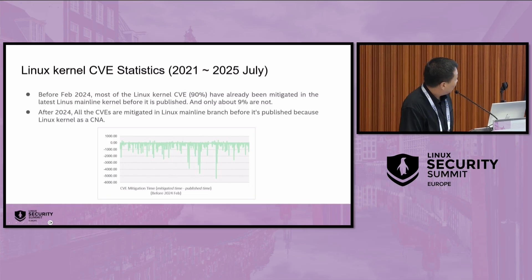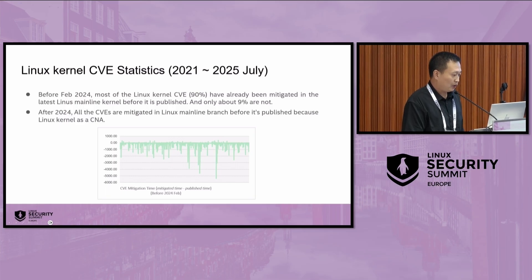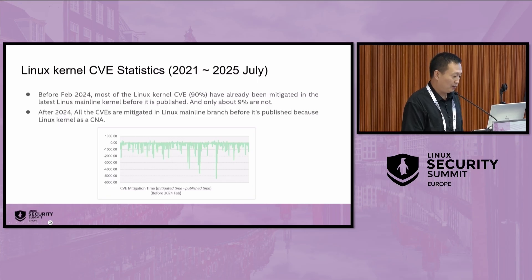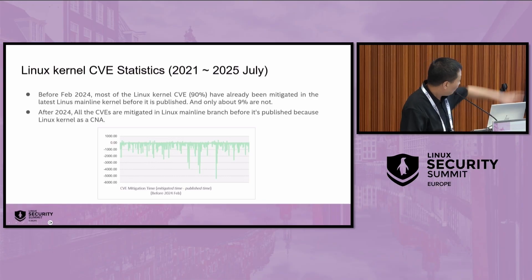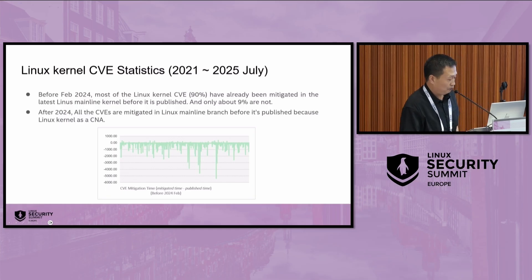This slide shows my statistical data from 2021 to last month, summarizing all Linux kernel CVEs over almost four years. Before February 2024, most LTS kernel CVEs had already been mitigated in the latest LTS mainline kernel before publication — only about 9% were not. But after 2024, all CVEs are mitigated in the LTS mainline branch before being published by kernel.org. This table summarizes the time gap between the publication time and the timestamp of the fixed patch in the mainline kernel — a negative value means the CVE was already fixed before publication.